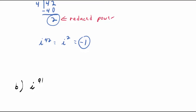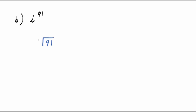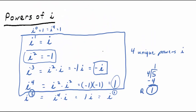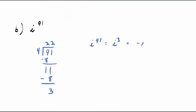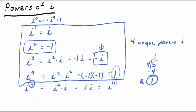Pretty trippy. Let's try I to the 91. Take 91, divide by 4: four goes into 9 twice, bring down the 1, and the remainder is 3. So I to the 91 equals I cubed. But I cubed reduces — I cubed equals negative I. So believe it or not, I to the 91 is equal to negative I. You need to know those four unique powers of I: I to the 1 is I, I squared is negative 1 (the most important one), I cubed is negative I, and I to the fourth is 1.